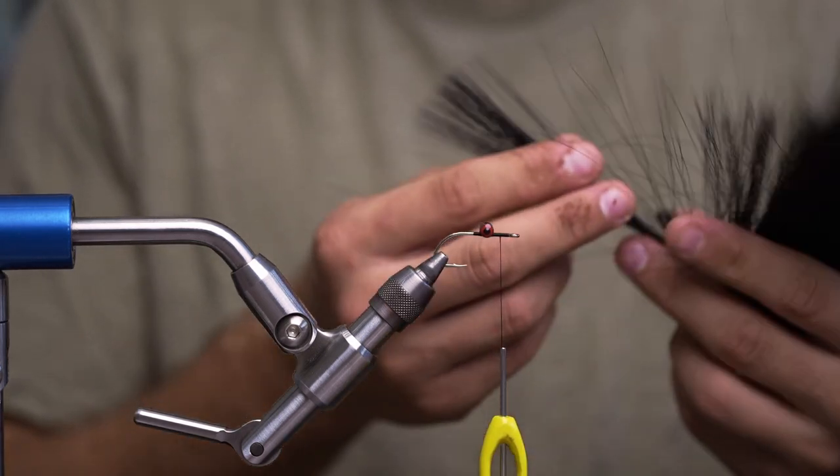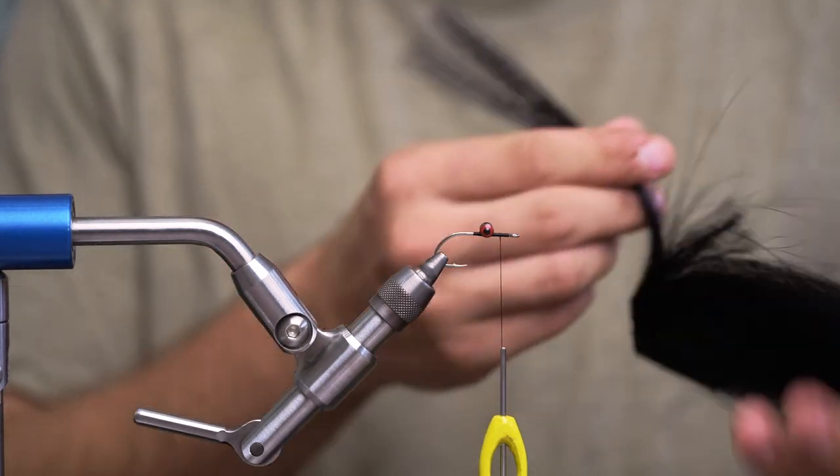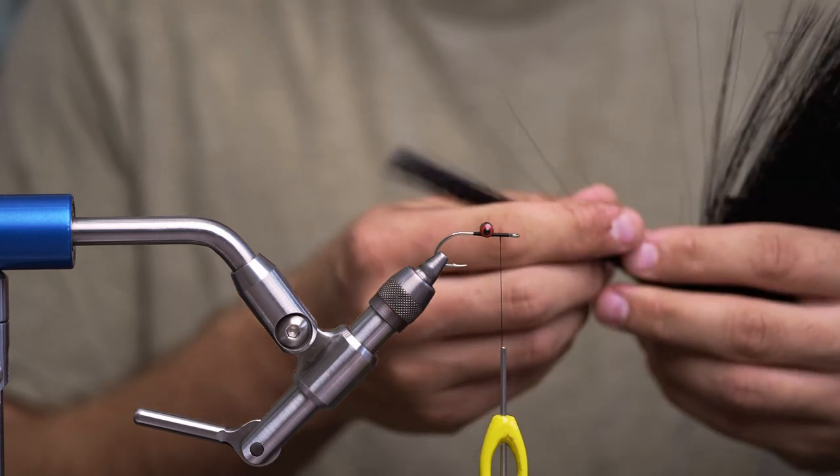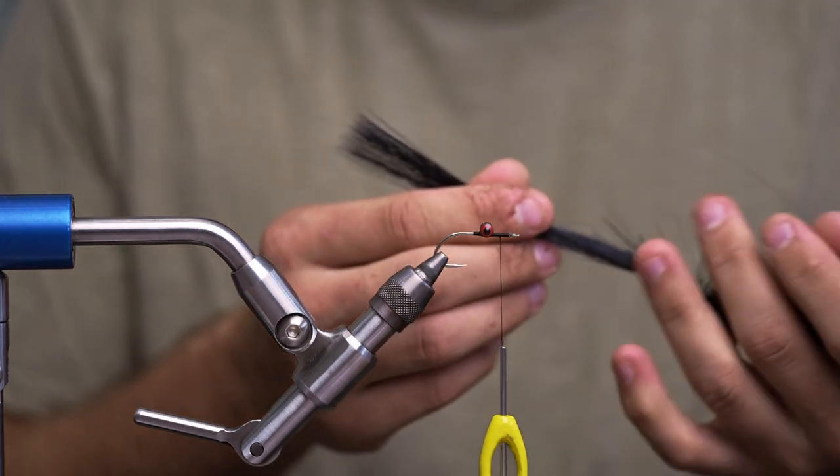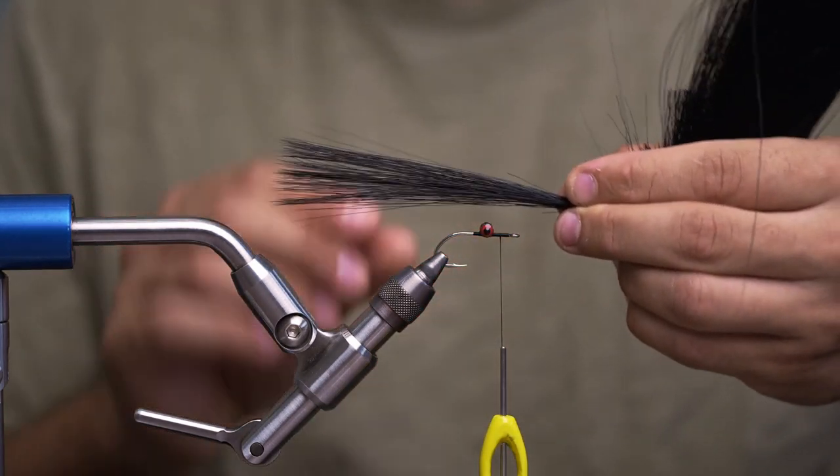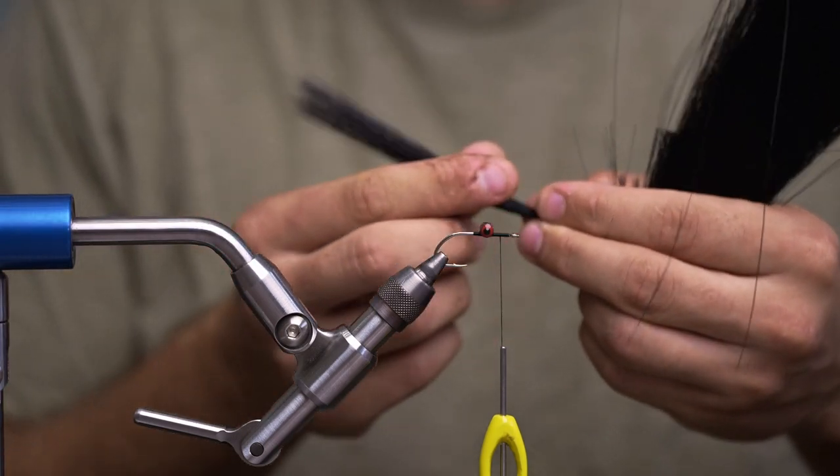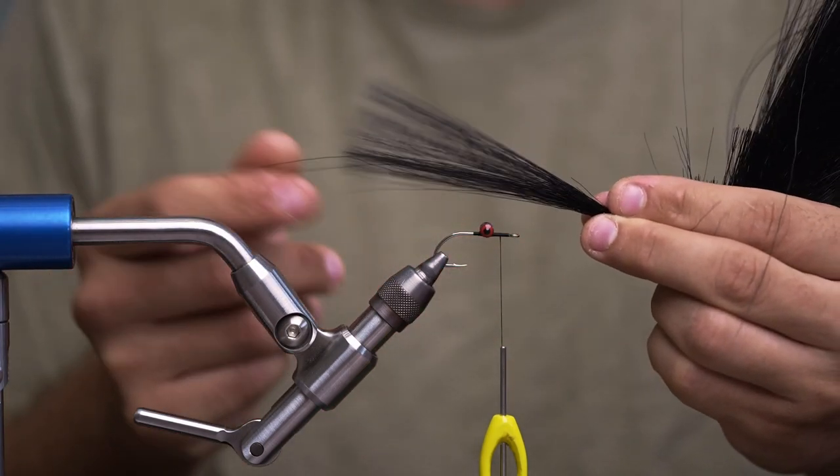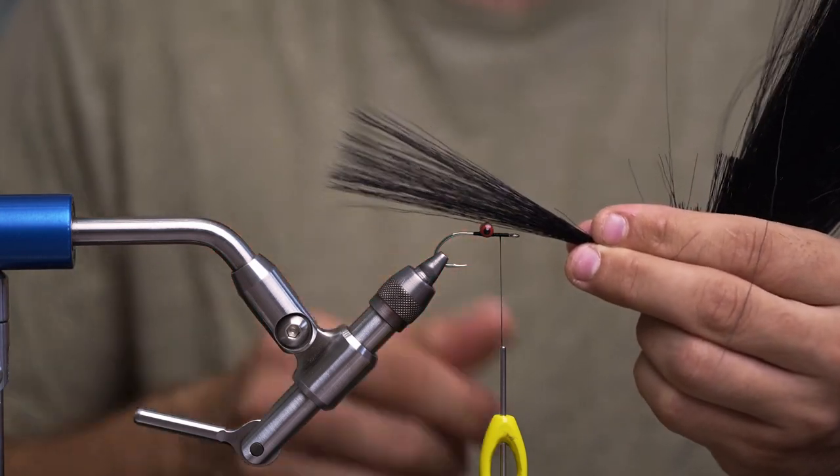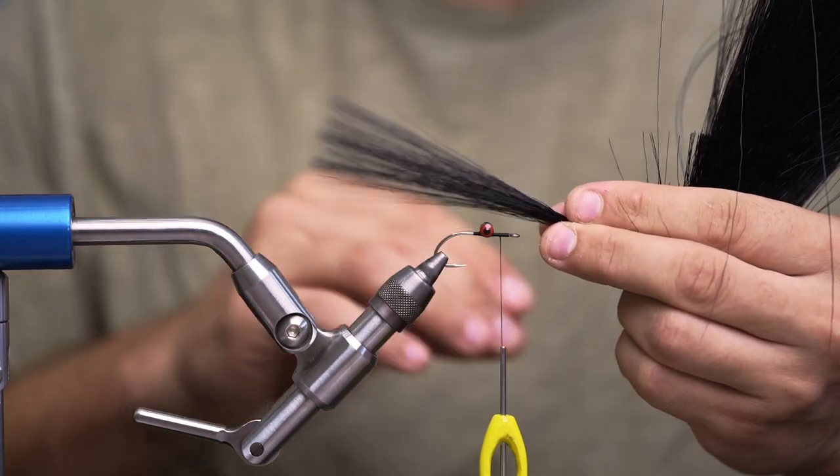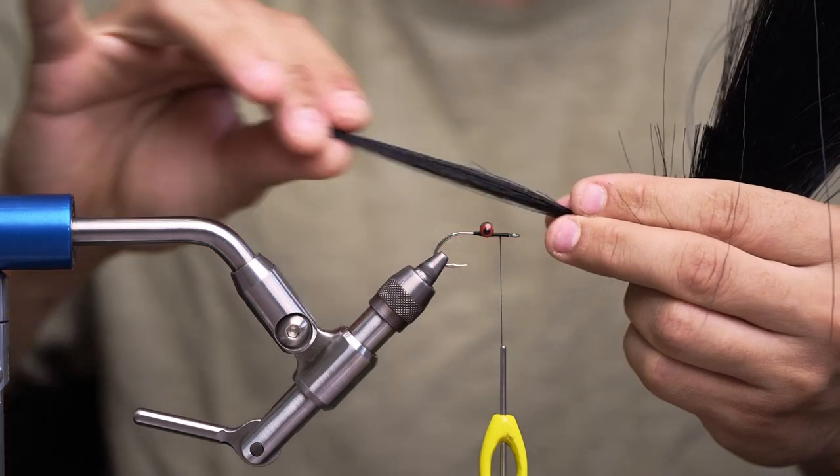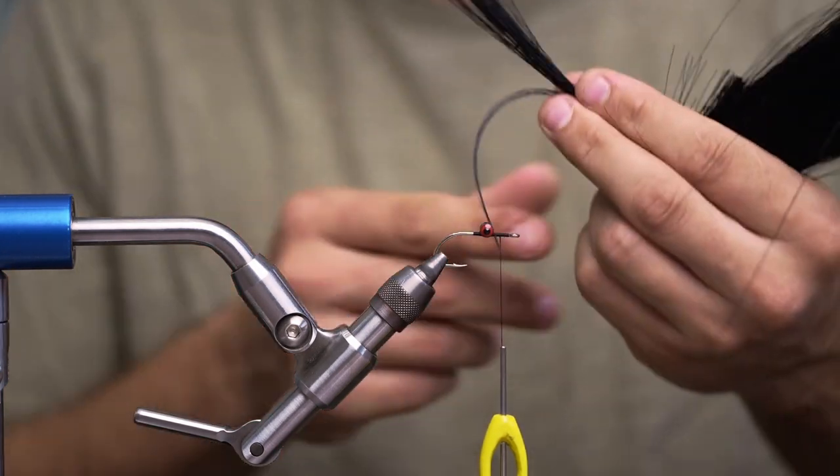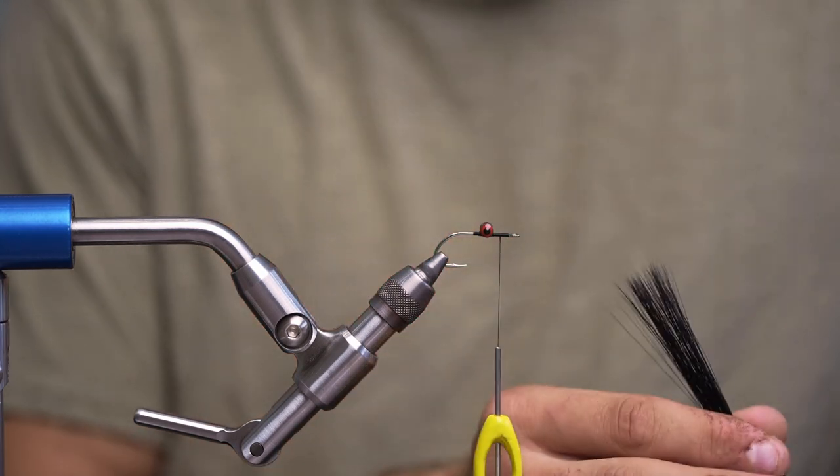Next up we got our faux bucktail. This material is a synthetic material. It is similar to bucktail, but it's not natural and it's not hollow, so it doesn't quite do that same flair that natural bucktail does, but it's a lot more durable and to me that's such a bigger positive than the little bit of extra movement that you get with natural bucktail. But for this purpose synthetic bucktail is going to be our choice.